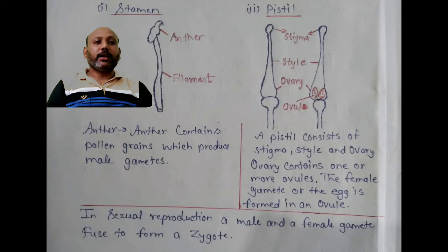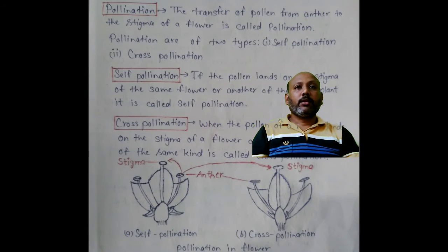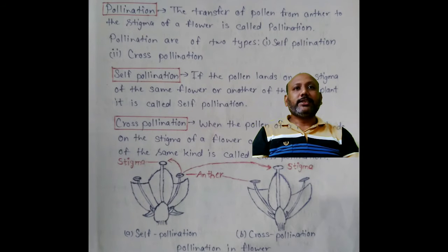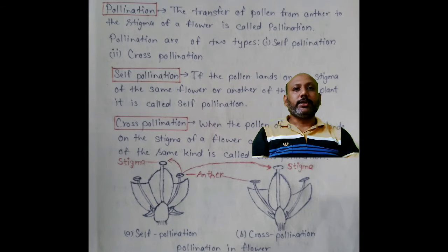In sexual reproduction, a male and a female gamete fuse to form a zygote. In plants, sexual reproduction is completed by the process called pollination. The transfer of pollen from the anther to the stigma of a flower is called pollination. Pollination is of two types: self pollination and cross pollination.